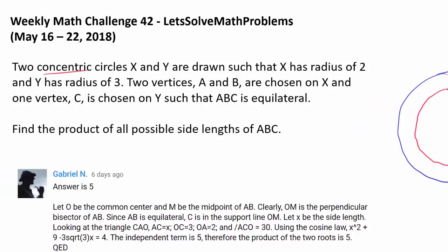Two vertices A and B are chosen on X, and one vertex C is chosen on Y, such that ABC is equilateral. We wish to find the product of all possible side lengths of ABC.